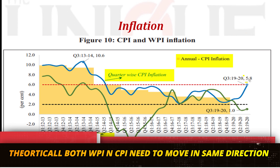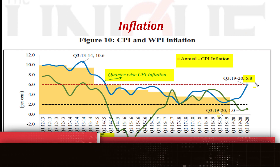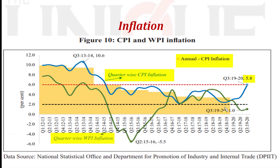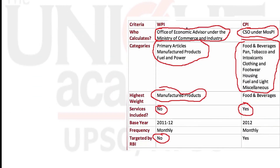CPI inflation is 5.8% while WPI inflation is 1%, so there is a huge divergence. To understand this, we need to first understand four concepts: Consumer Price Index (CPI), Wholesale Price Index (WPI), core inflation, and headline inflation.